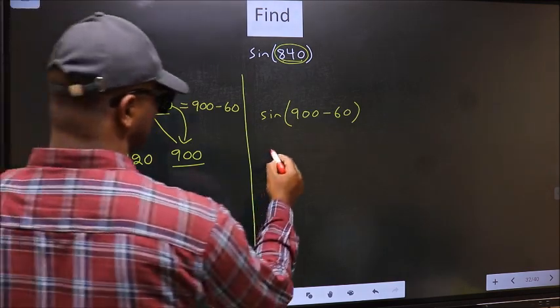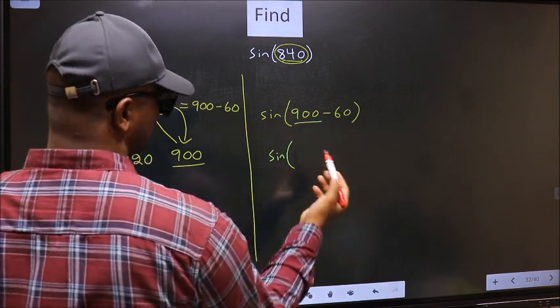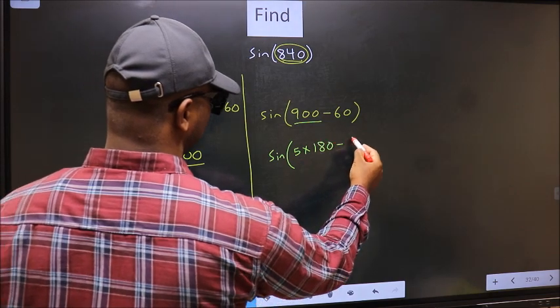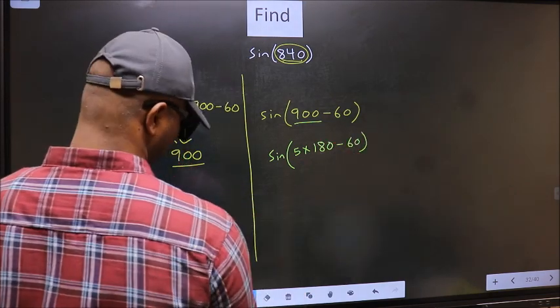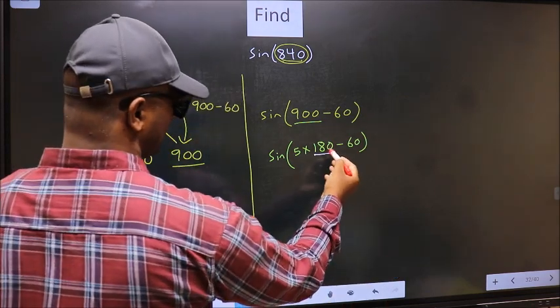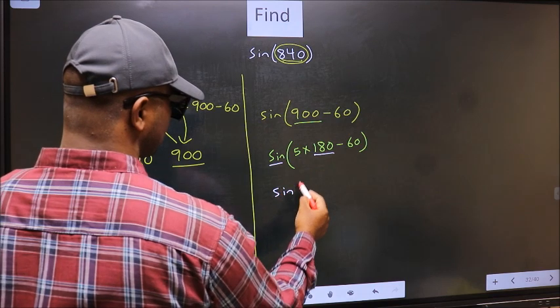Sin. In place of 900, now we should write 5 into 180 minus 60. Next. Here we have 180. So sin is not going to change. It will remain sin.